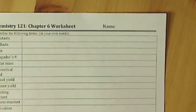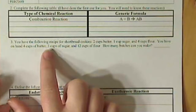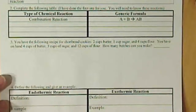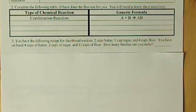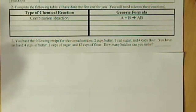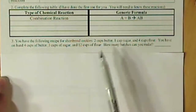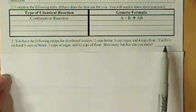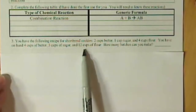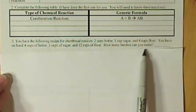I'd like to start with your chapter six worksheet, question number three, which gives us a cookie recipe. We have two cups of butter, one cup of sugar, and four cups of flour needed per batch. This is not an actual recipe — I made it up to keep it simple. We're told we have on hand four cups of butter, three cups of sugar, and twelve cups of flour.